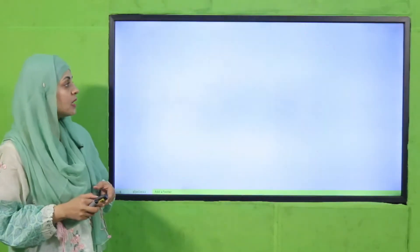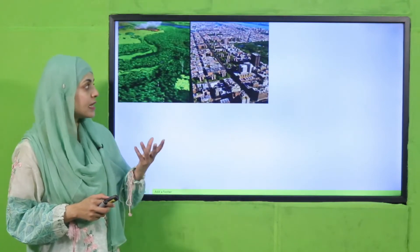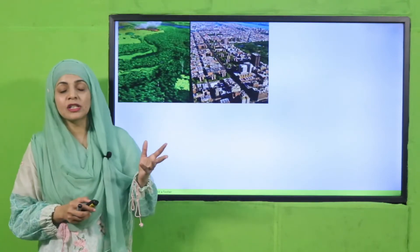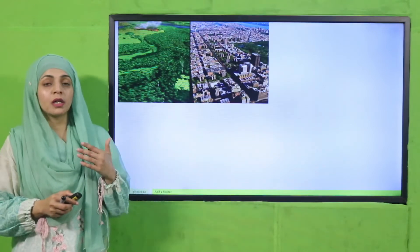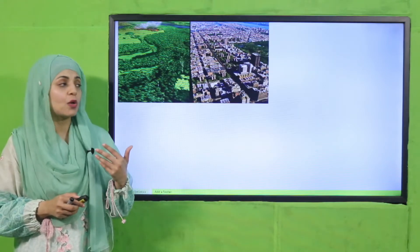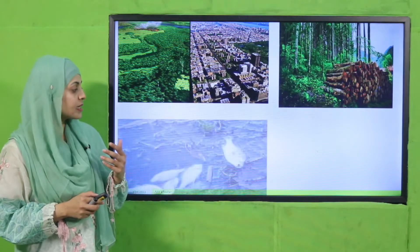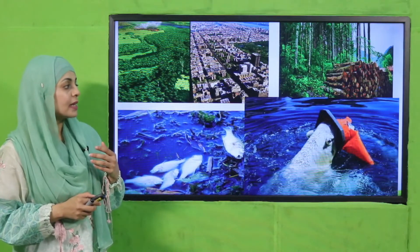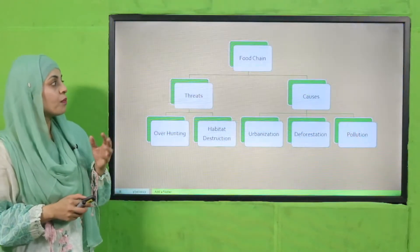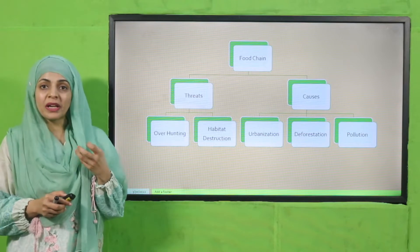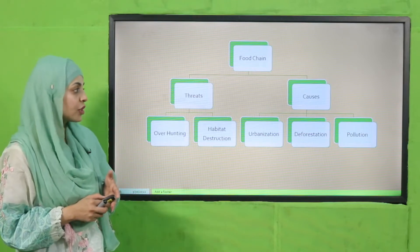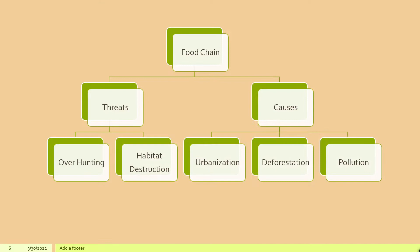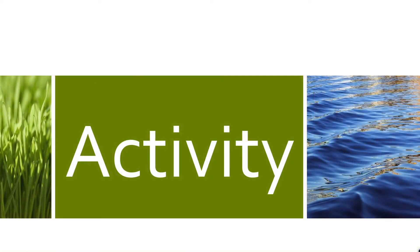Very good. Now we will move forward. As you can see, urbanization is the main cause of damage to the ecosystem, followed by deforestation, water pollution, and air pollution. The major threats to the food chain are over-hunting and habitat destruction, and their causes are urbanization, deforestation, and pollution.